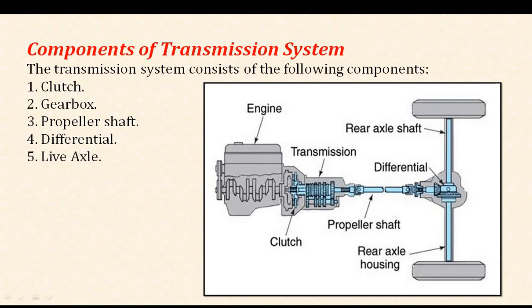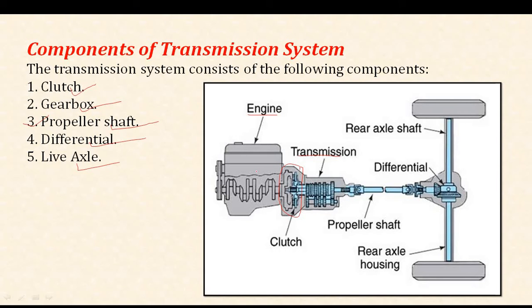Now let's discuss the components of the transmission system. As mentioned in this presentation, the first component is the clutch, then the gearbox, third is the propeller shaft, fourth is the differential, and fifth is the live axle. As we have already discussed, the clutch is used to engage and disengage between the engine and transmission system to transmit the power from the source of energy to the gearbox.